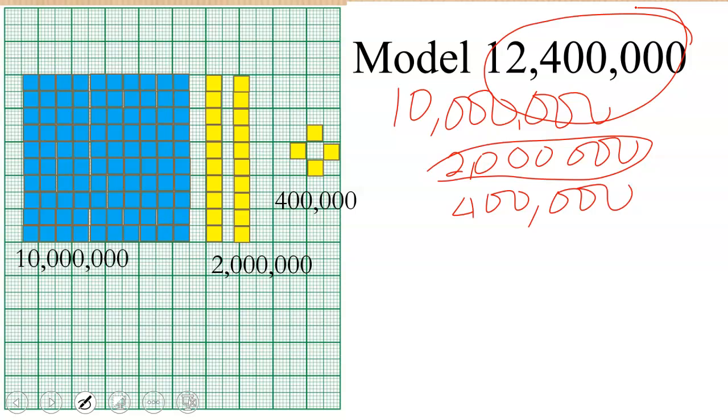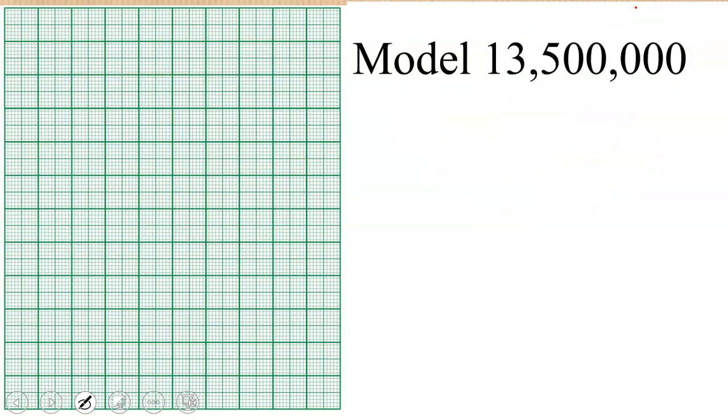Now let's try another one. I want to model 13 million 500,000. So 13 million simply means we need 10 million, then again we need 3 million, right, then again we need 500,000.